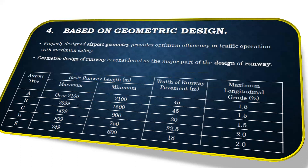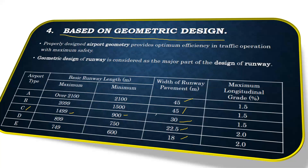Airport type B has a maximum runway length of 2099 meters and a minimum of 1500 meters. For type C it is a maximum of 1499 meters and a minimum of 900 meters. For the width of runway pavement: type A requires 45 meters, type B also 45 meters, type C requires 30 meters, type D requires 22.5 meters, and type E requires 18 meters. The maximum longitudinal grade is 1.5% for types A, B, and C, and 2% for types D and E. These are research-based standards that we follow when setting up any airport.